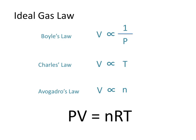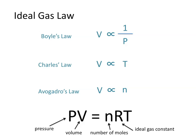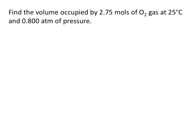PV equals nRT. Where P is the pressure, V is equal to volume, N is the number of moles, R is the Ideal Gas Constant, which has a value of 0.0821 liters times atmospheres divided by moles times Kelvin. And T, which is equal to temperature. Let's look at an example using the Ideal Gas Law.